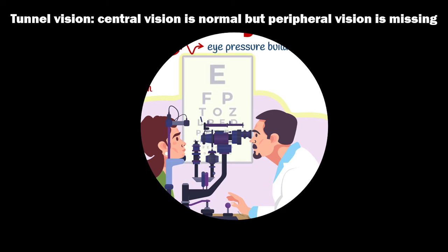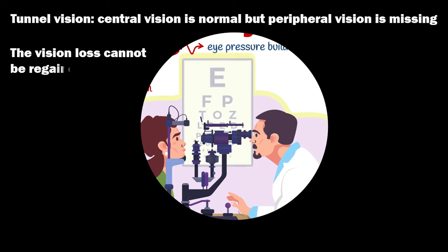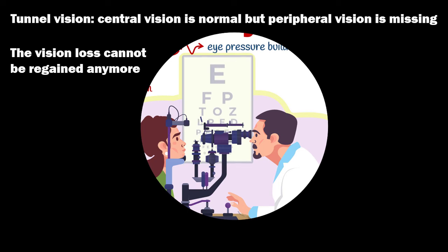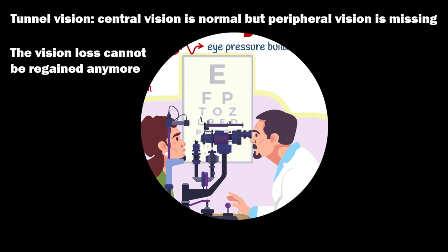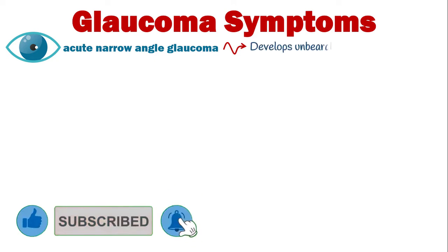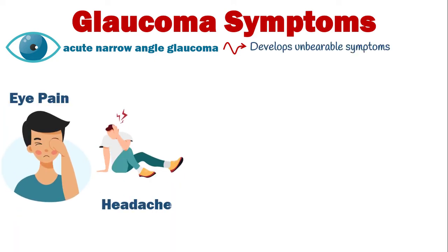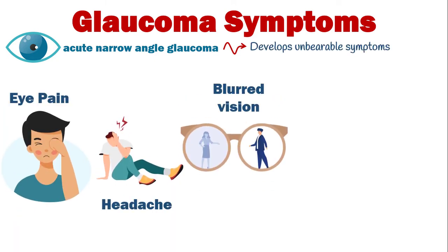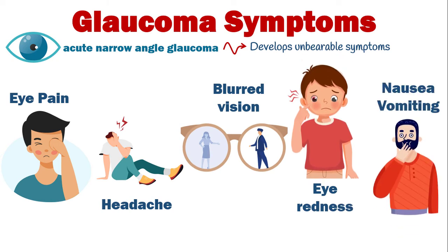In the late stages, tunnel vision develops — meaning central vision is normal but peripheral vision is missing. Unfortunately, the vision loss cannot be regained. Patients with chronic narrow-angle glaucoma are mostly symptom-free as well. By contrast, acute narrow-angle glaucoma almost always develops unbearable symptoms, including intense eye pain, headache, blurred vision, eye redness, nausea, and vomiting.